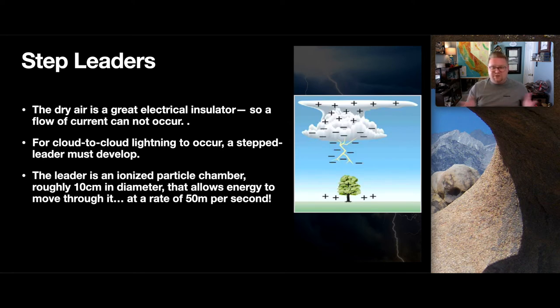The next step is what we call the step leaders. The dry air that's generally observed is a great electrical insulator. So, it actually stops the flow of currents. For cloud-to-ground lightning to occur, a stepped leader must be developed. There must be some connecting point that will draw them together. The leader is generally an ionized particle chamber, roughly about 10 centimeters in diameter, that will allow energy to move through it at a rate of about 50 meters per second. You're going to need this tube in which for these ions to be able to transfer within one another.